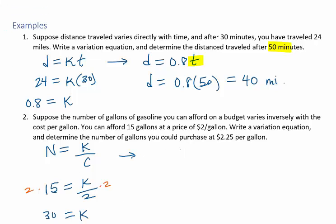So our variation equation is n equals 30 divided by c. And lastly, we want to know how many gallons we could purchase for $2.25 per gallon. $2.25 is a cost, so we'll substitute $2.25 for c and evaluate. 30 divided by $2.25 is approximately 13.3 gallons.